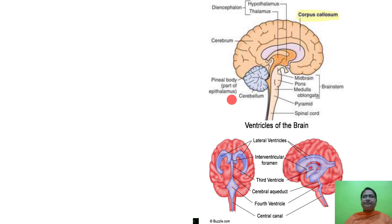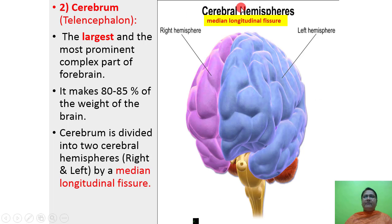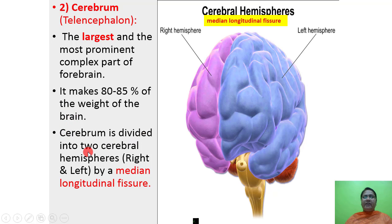The second component is the cerebrum, also called telencephalon. It is the largest and most prominent complex part of the forebrain, making up 80 to 85 percent of the weight of the brain. The cerebrum is divided into two cerebral hemispheres — right hemisphere and left hemisphere — by a median longitudinal fissure.